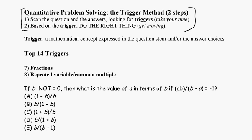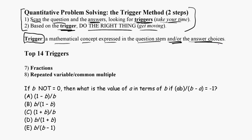This is on your UQR questions page — the first page: quantitative problem solving, the trigger method, two steps. Step one is to scan the question and the answers. Scan over everything, looking for what I call triggers, and take your time. Step two is based on that trigger — you do the right thing and get moving. A trigger is a mathematical concept expressed in the question stem and/or the answer choices. Classic examples include fractions and repeated variables.